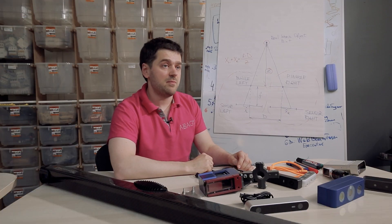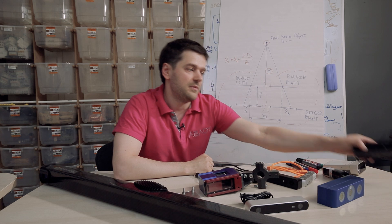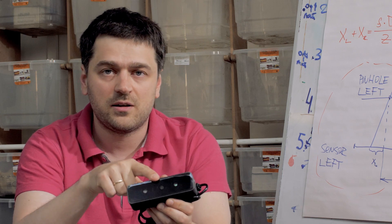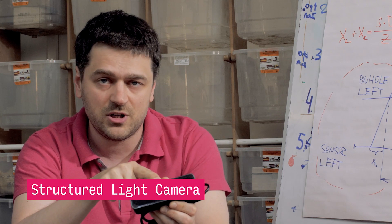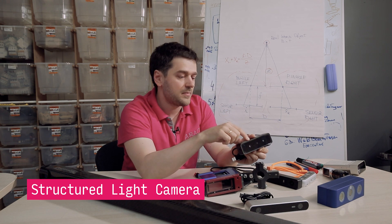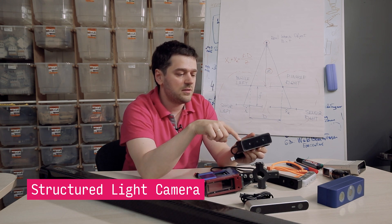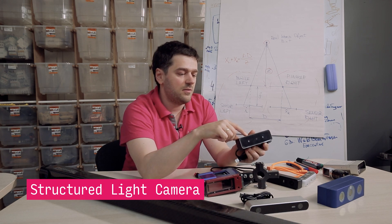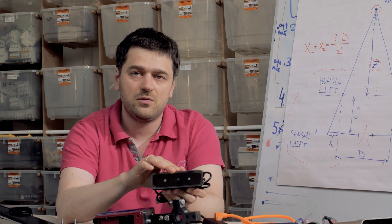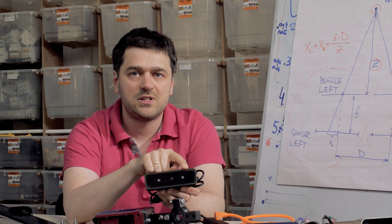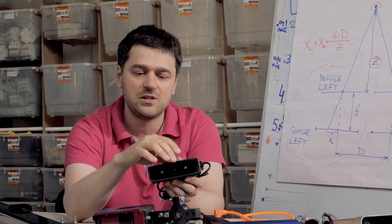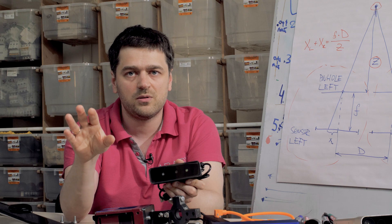The next kind of 3D camera is the structured light camera. Here we have one camera and a laser projector — or some light projector, it doesn't have to be a laser — and another camera that captures color, not depth. The depth acquisition works as follows: the projector emits a known pattern onto the scene, the camera sees the pattern, and by the deformation of that pattern it can recognize the distance from the camera to each point it is shooting.